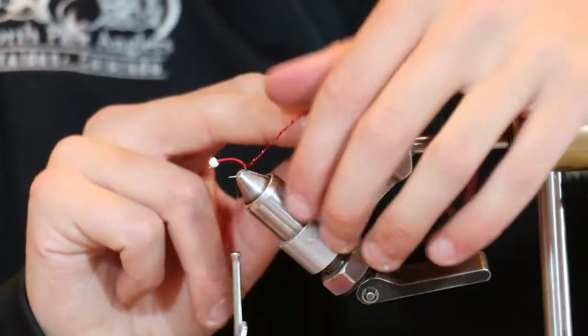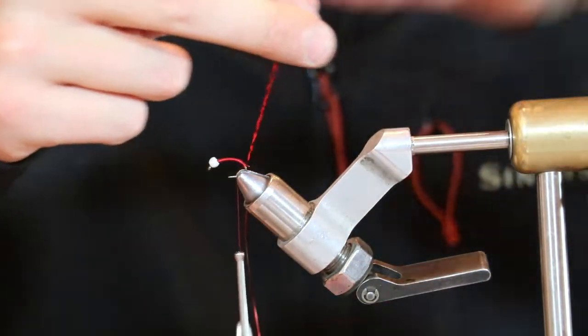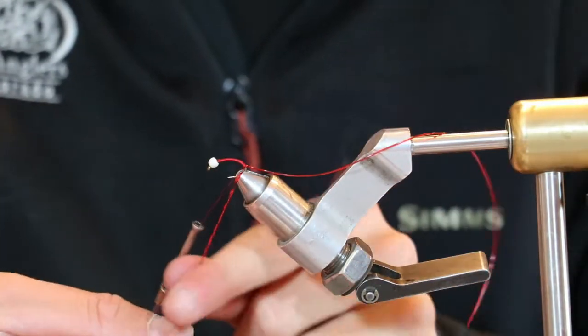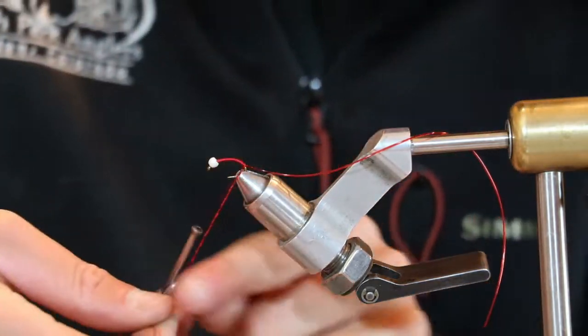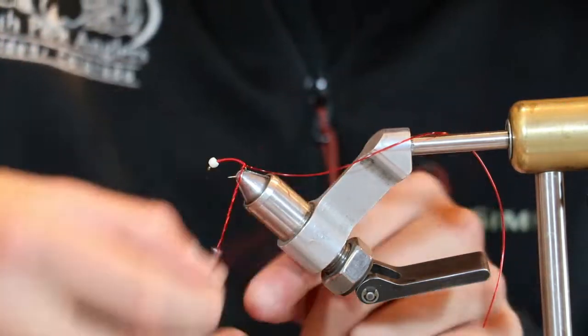Get that stretch tubing out of the way. You'll grab your crystal flash and start making wraps going up the body with it.